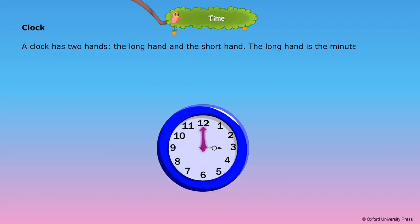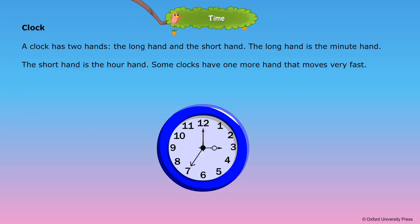The long hand is the minute hand. The short hand is the hour hand. Some clocks have one more hand that moves very fast. This hand is called the seconds hand.